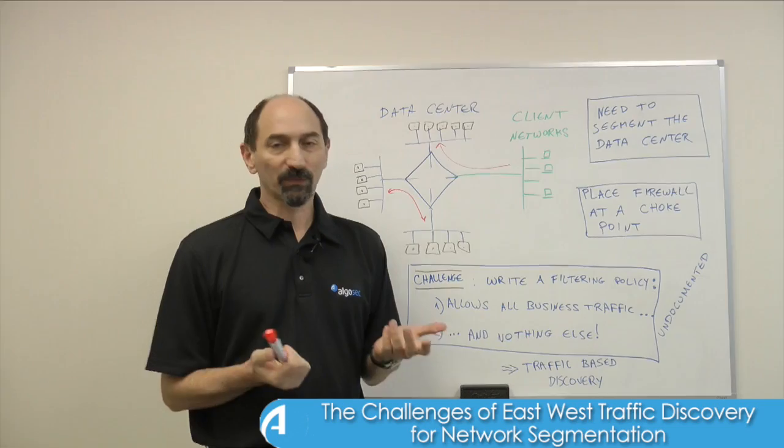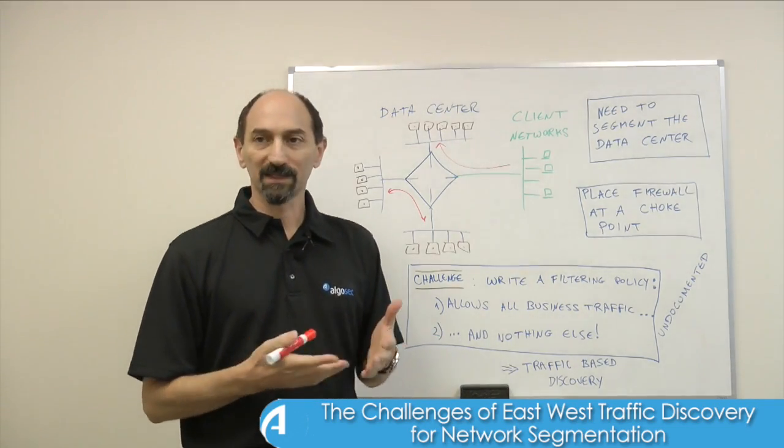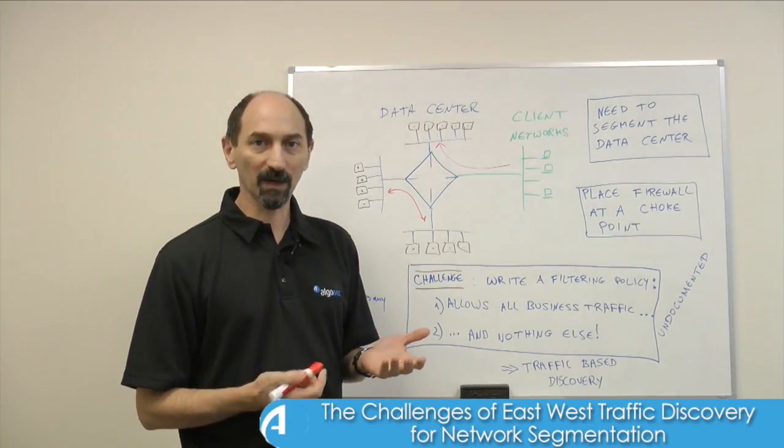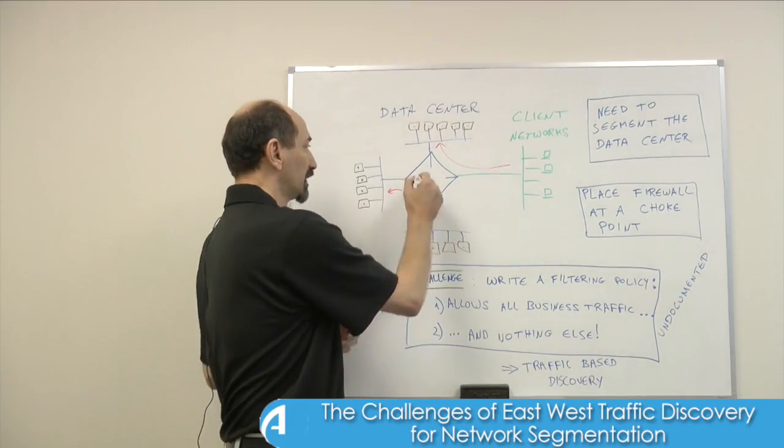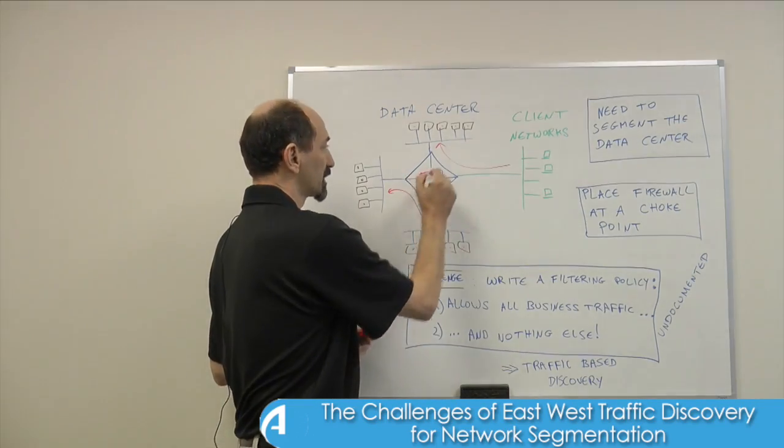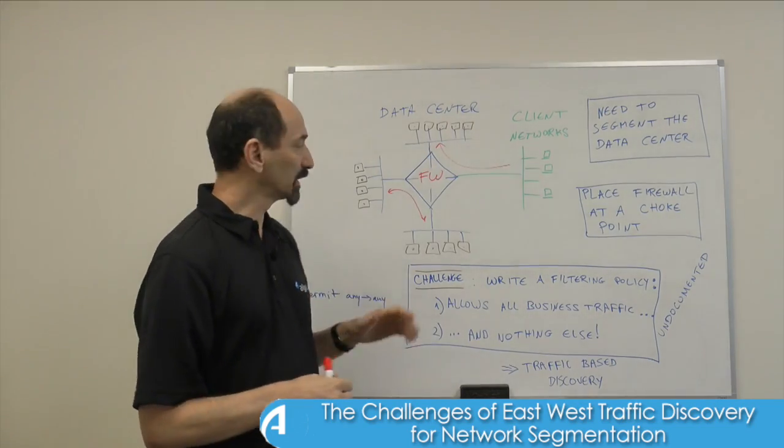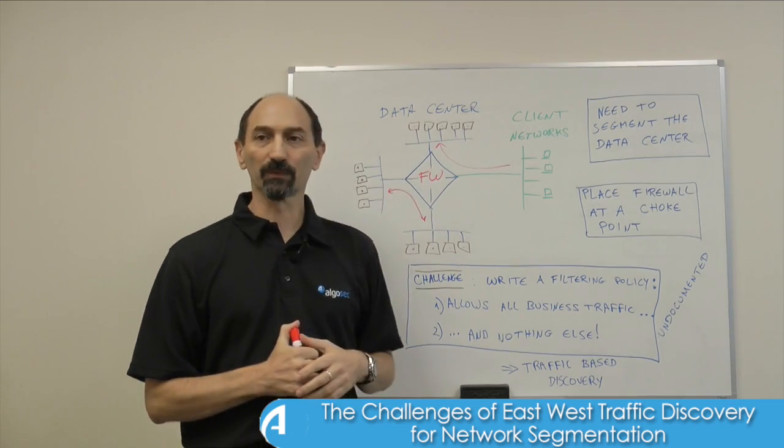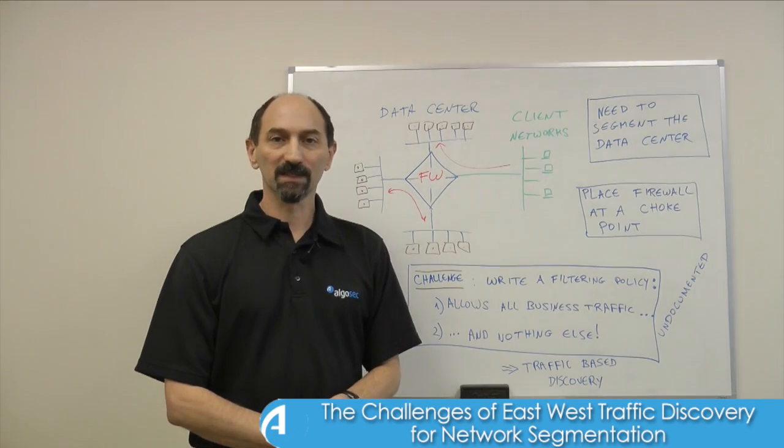The first step is to place a filtering device, a firewall, at a choke point in the network. So you identify where you could place a firewall in the center of the traffic in the data center so that it can see all the traffic flows that it needs to filter and you've made the decision to place a firewall there.